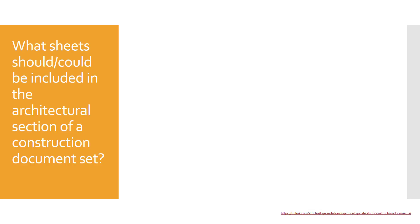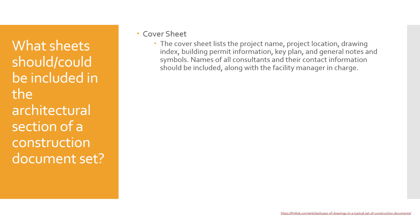What sheets could be included in the architectural section of a construction document set? There's always a cover sheet listing the project name, the location, a drawing index like a table of contents, building permit information, a key plan — a visual guide to what the symbols mean — general notes, additional symbols, and the names of all the consultants with their contact information and who is in charge of the project.